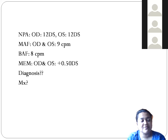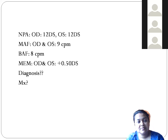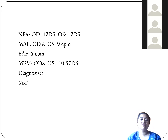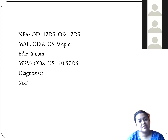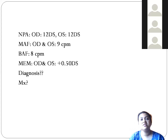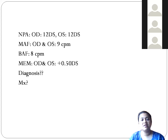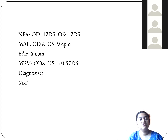To train divergence insufficiency, we use free space fusion cards. These are cards — similar to life-saver cards — with red and green circles. The patient wears red-green goggles and fuses the two circles so that a third circle appears in the middle. This stimulates the negative fusional vergence system.